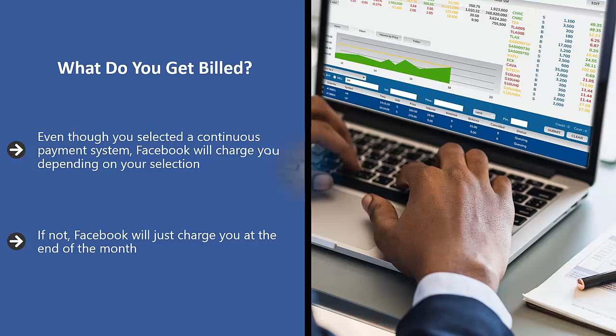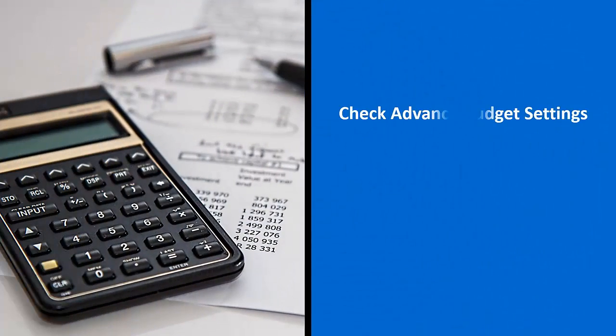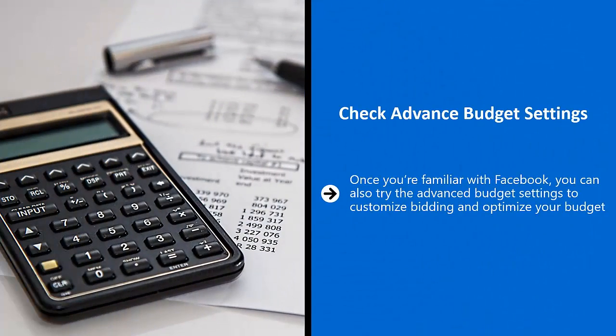If not, Facebook will just charge you at the end of the month — whatever amount of bills you've racked up, Facebook will charge against your card on file or against your PayPal account. Check the advanced budget settings: once you're familiar with Facebook, you can also try the advanced budget settings to customize bidding and optimize your budget. Once you're satisfied with all the settings above, choose ad creative — this will start the process where you actually create your ad.